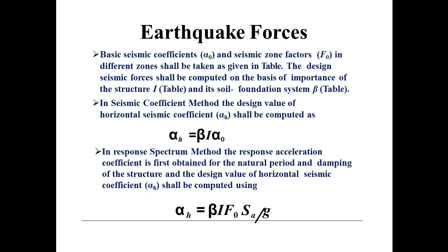In the seismic coefficient method, the design value of horizontal seismic coefficient alpha_H shall be computed as: alpha_H = beta × I × alpha_naught, where beta is the soil foundation system value, I is the importance of the structure, and alpha_naught is the basic seismic coefficient. This method is known as the seismic coefficient method.